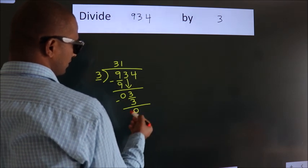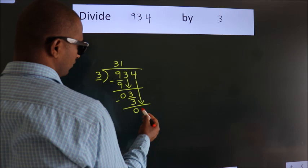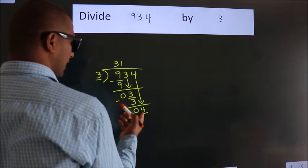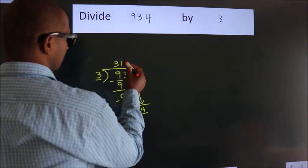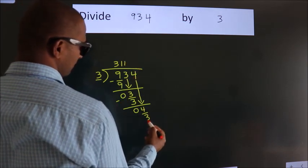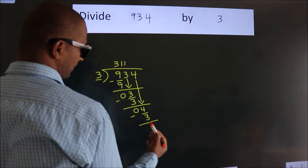After this, bring down the beside number, so 4 down, so 4. A number close to 4 in 3 table is 3 1s, 3. Now, we subtract, we get 1.